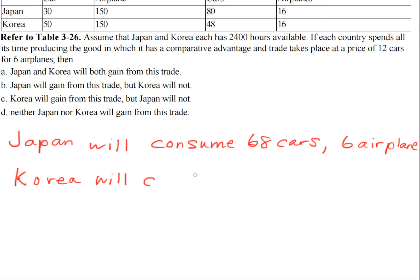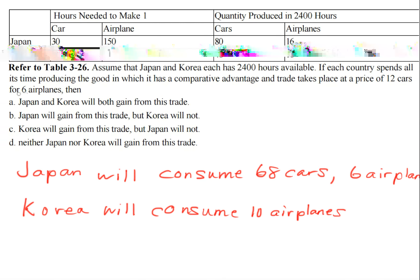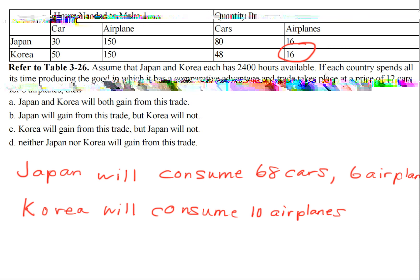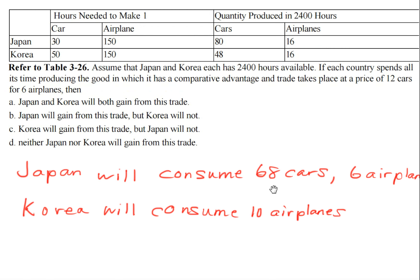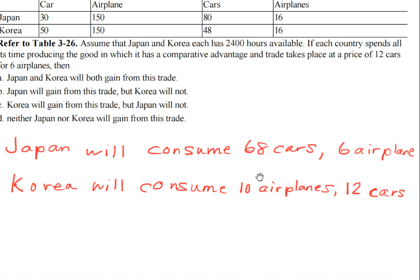Korea will consume 10 airplanes — they're going to send 6 airplanes to Japan, and since the most they produce by specializing is 16, that leaves 16 minus 6 equals 10 airplanes. They're also going to receive 12 cars from Japan, which they will consume as well — which is the reason they are trading.